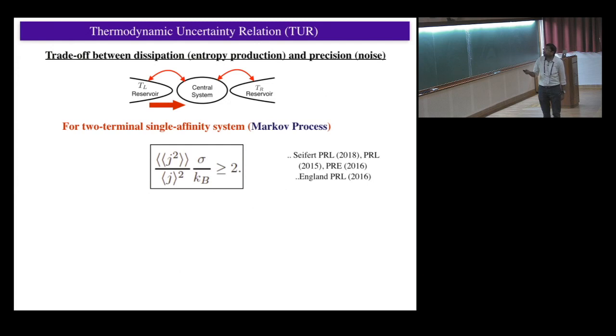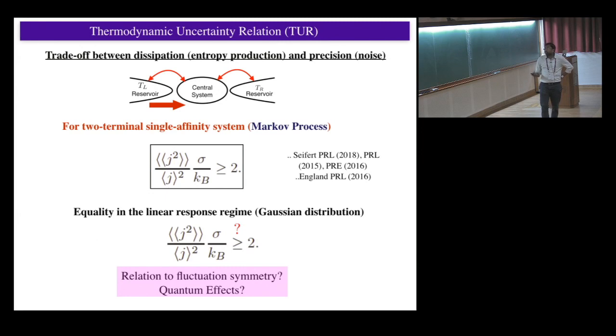So this was first given by Udo Seifert in 2015, followed by various papers. But this relation was primarily derived or shown numerically for Markov processes. But then the question we started asking - the equality happens if the distribution of current is Gaussian, then that's the limit where you have equality. But the question we started asking is how universal these results is, this bound particularly. So if this is universal, can I show it from the underlying fluctuation symmetry? And what about taking into account quantum effects?